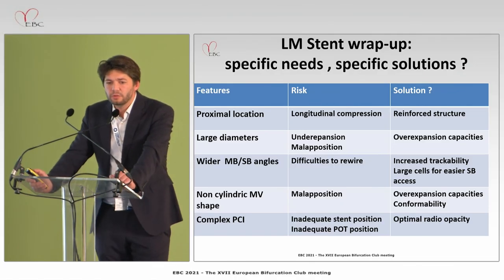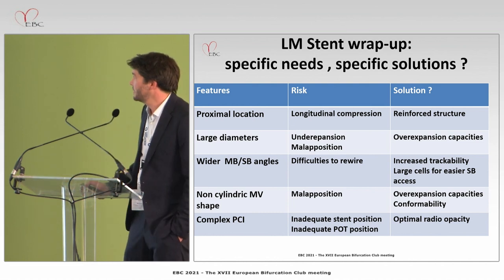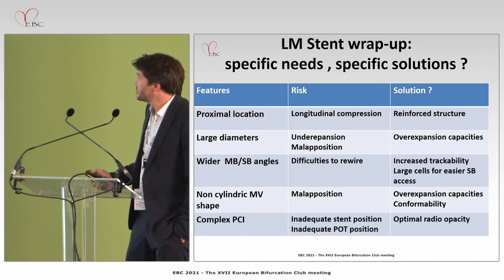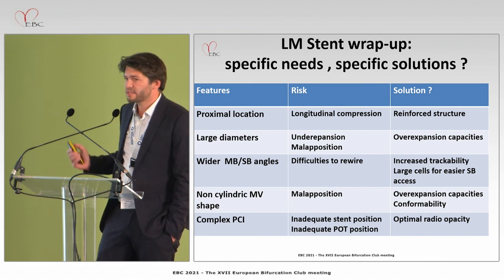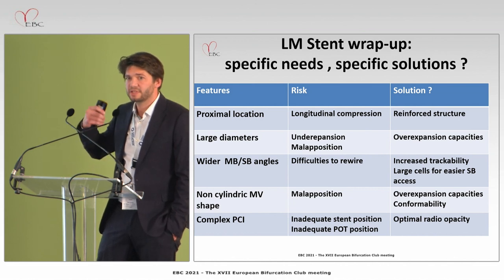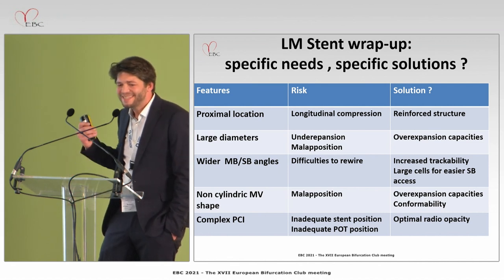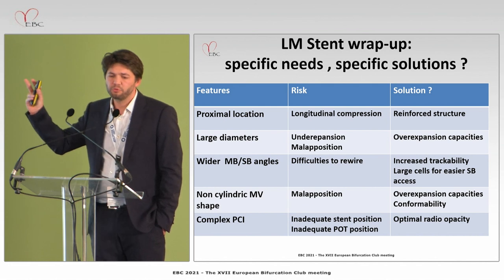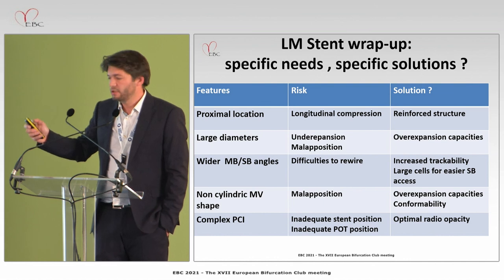As you've understood, when dealing with a stent for left main, we have specific needs driven by the specific risks I've described. The solutions will come from a reinforced structure, good overexpansion capacities, increased trackability, and large cells to correctly access the side branch. I also think the cherry on the cake is optimal radio-opacity, because you are doing very precise PCI — especially when trying to correctly cover the ostium of the left main — so it's very important to be able to clearly see your stent.